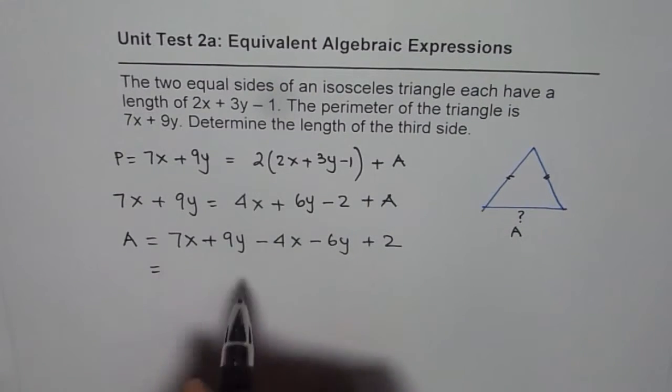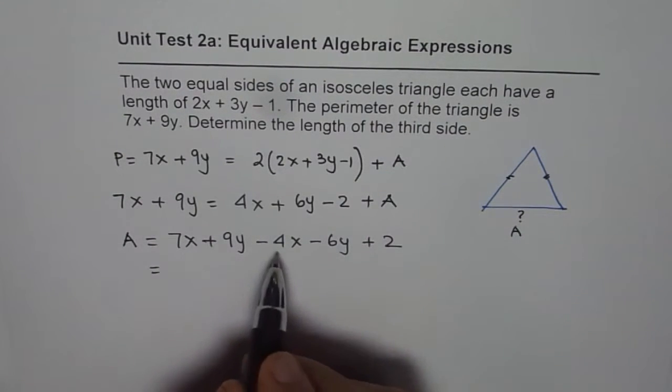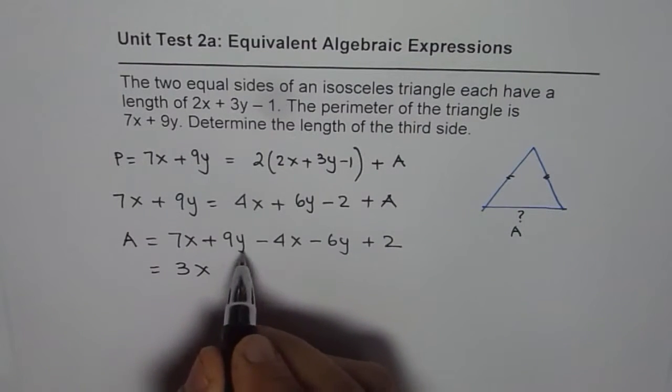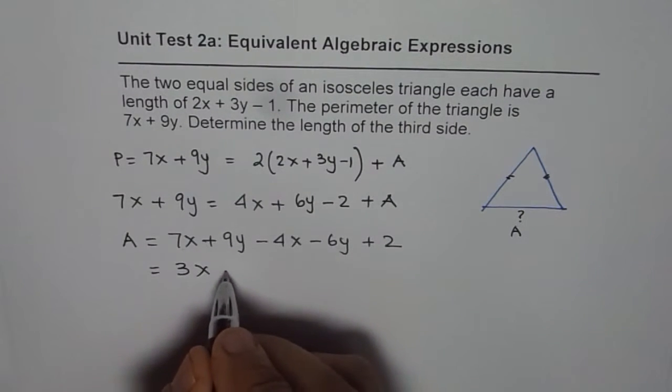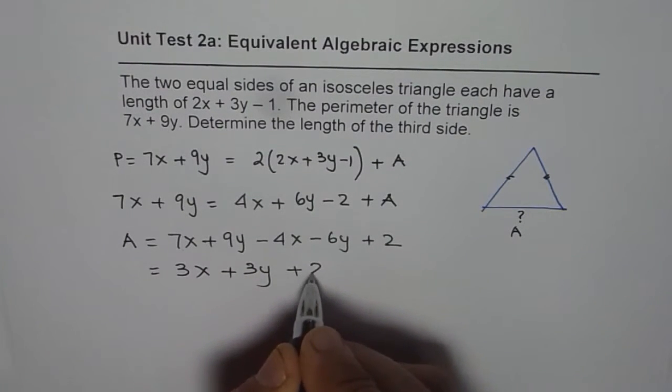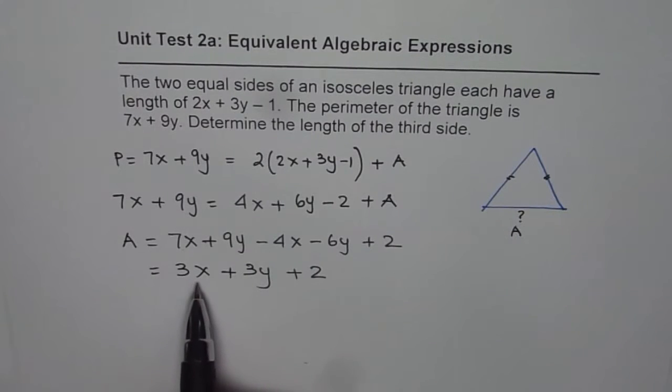Combining the like terms: 7x - 4x is 3x, 9y - 6y is 3y, and then the constant 2. So the third side is 3x + 3y + 2.